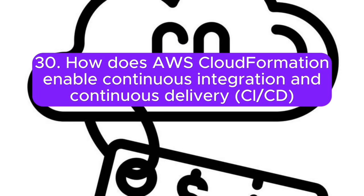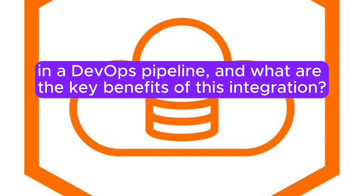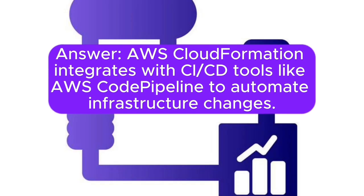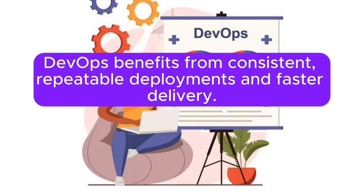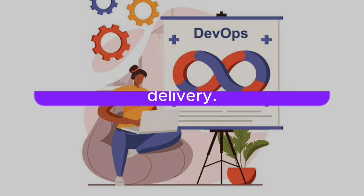Question 30: How does AWS CloudFormation enable continuous integration and continuous delivery (CI/CD) in a DevOps pipeline, and what are the key benefits of this integration? Answer: AWS CloudFormation integrates with CI/CD tools like AWS CodePipeline to automate infrastructure changes. DevOps benefits from consistent, repeatable deployments and faster delivery.